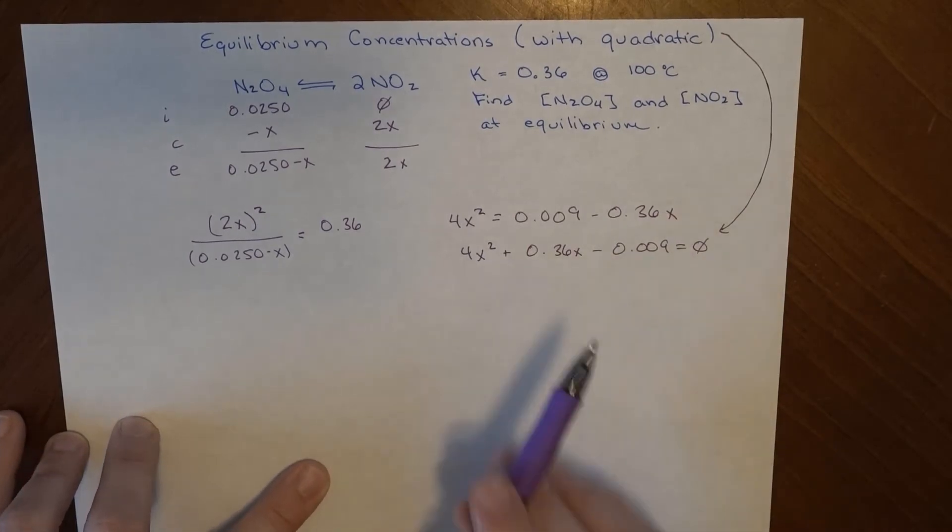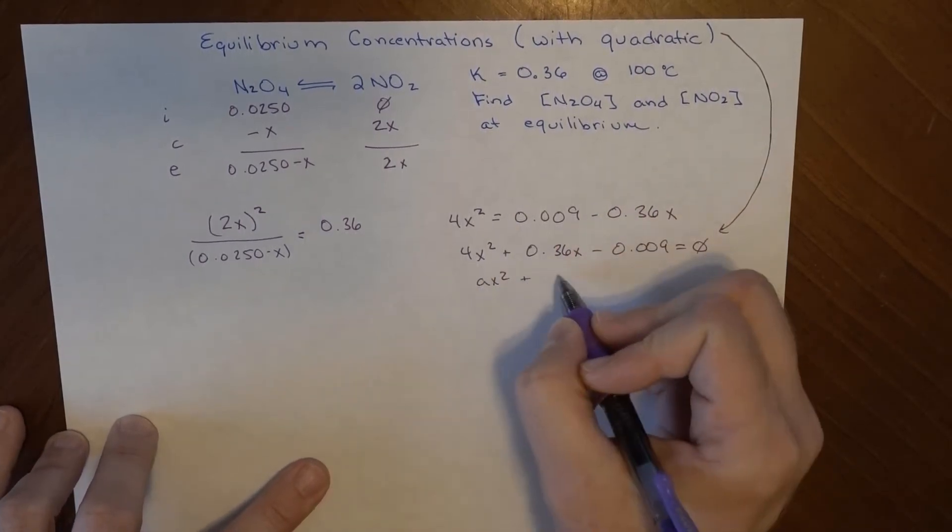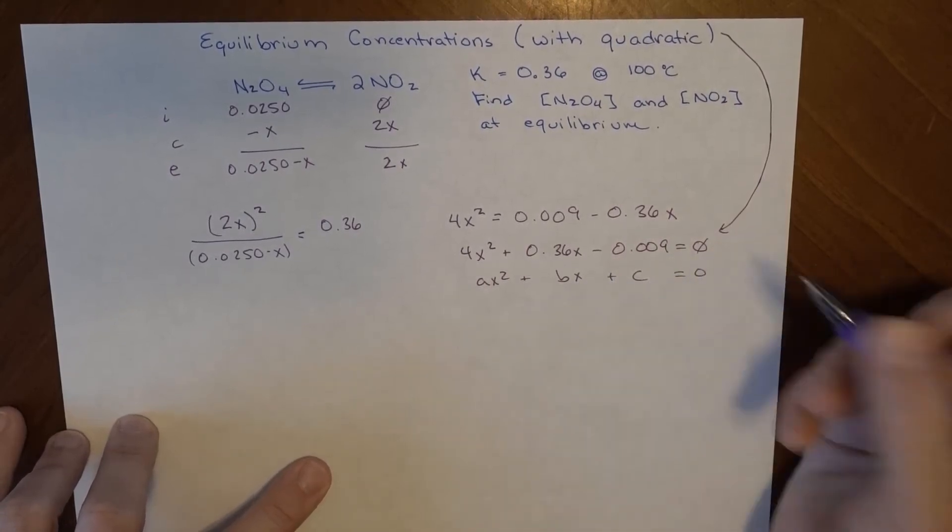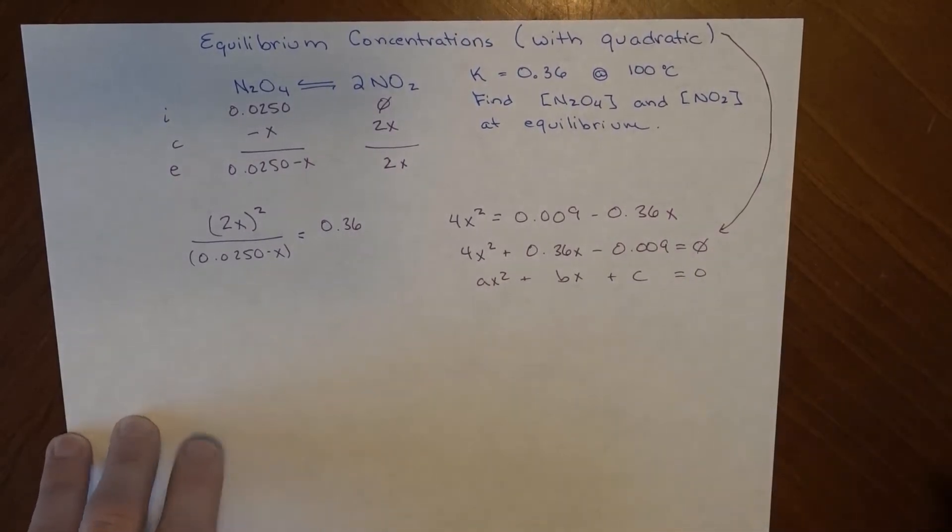So if I get an expression that looks like this, ax squared plus bx plus c equals 0, I can use the quadratic formula. So I'm going to do that.